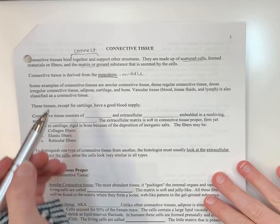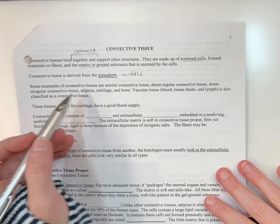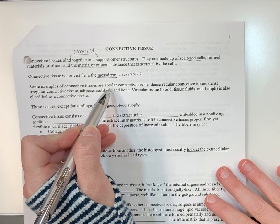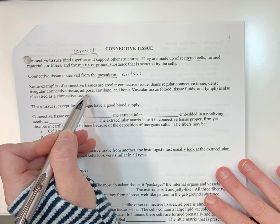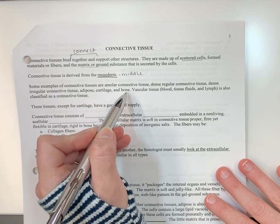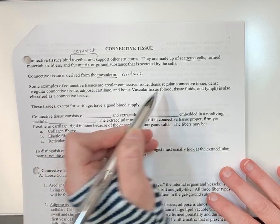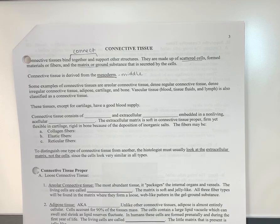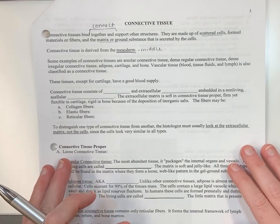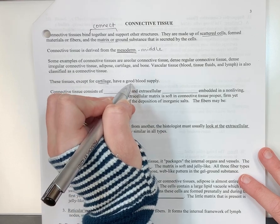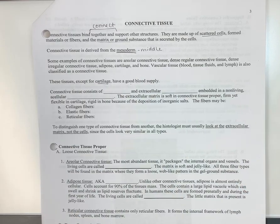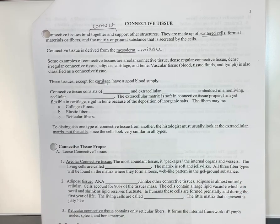So some examples. There's lots of different connective tissues in the body. Areolar connective tissue, dense regular, dense irregular, adipose, cartilage, bone, and vascular tissue, which is blood. We're going to talk about most of those. Now, with the exception of cartilage, all of these connective tissues do have their own blood supply. So they do have blood vessels or capillaries so that the cells can be living.